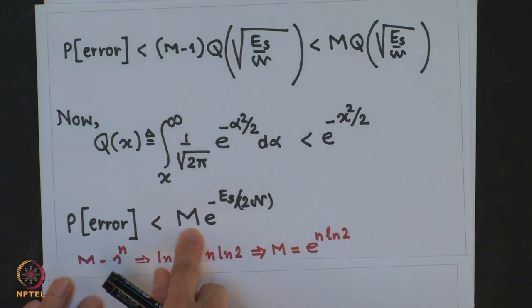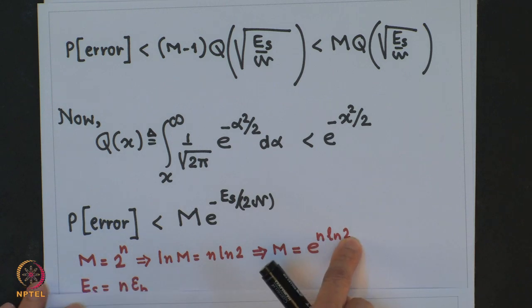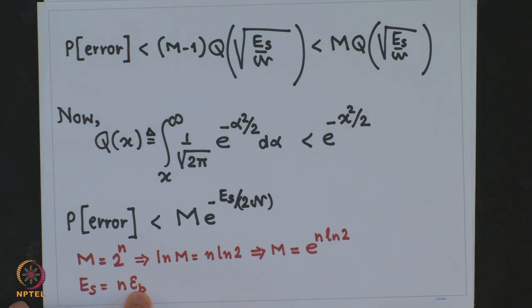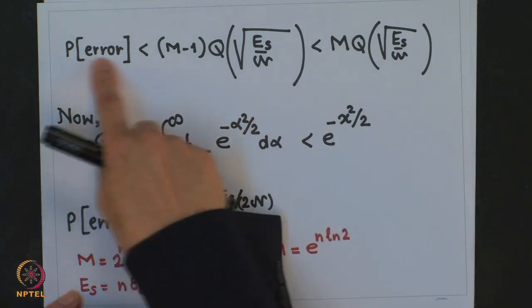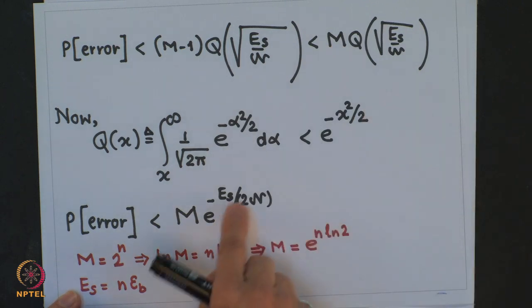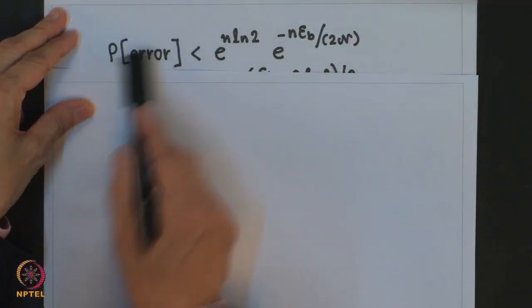Expressing M = 2^N = e^(N log 2), and using E_s = N · E_b (energy per symbol equals N times energy per bit), we substitute into the error expression to get a new upper bound for symbol error probability in terms of M and average energy per bit E_b.